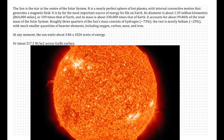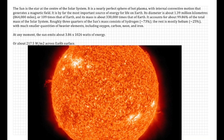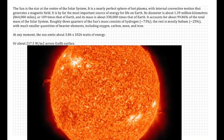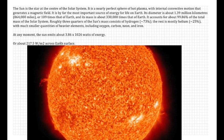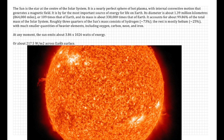Roughly three quarters of the Sun's mass consists of hydrogen, around 73%. The rest is mostly helium with much smaller quantities of heavier elements including oxygen, carbon, neon and iron.